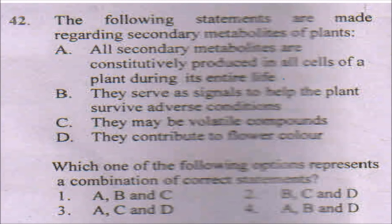The next question presents statements regarding secondary metabolites of plants. Option A — 'all secondary metabolites are constitutively produced in all cells of a plant during its entire life' — is wrong, since secondary metabolites are not constitutively produced in all cells. Option B — 'they serve as signals to help the plant survive in adverse conditions' — is true, as terpenoids and herbicide-resistant mechanisms use secondary metabolites. Options C and D — their volatile nature and contribution to flower color — are also true. The correct answers are B, C, and D.